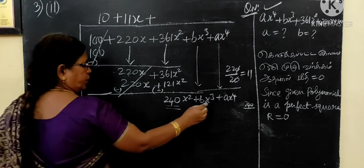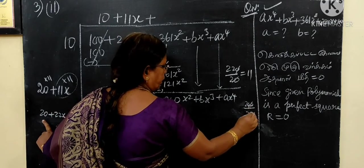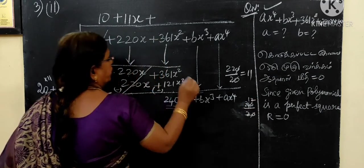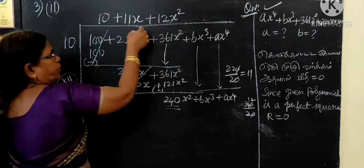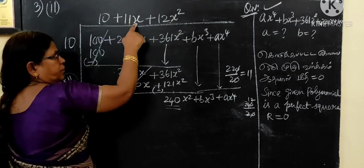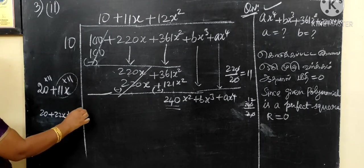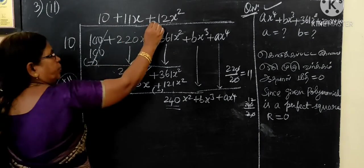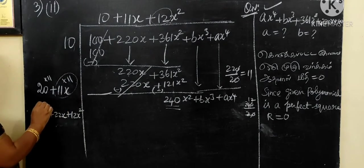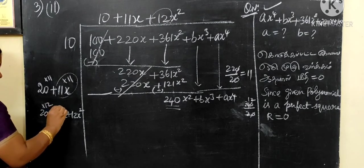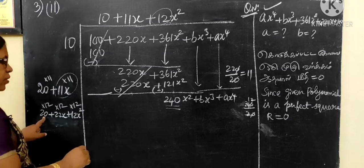This is the first term. If you are using the same model, you can cancel the model. Then, the model is x squared. The constant term is x squared.